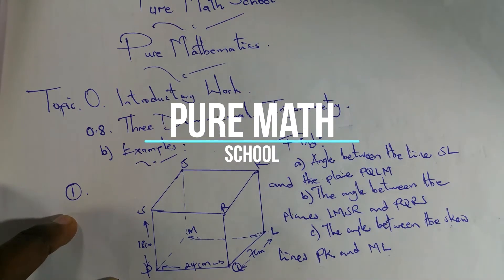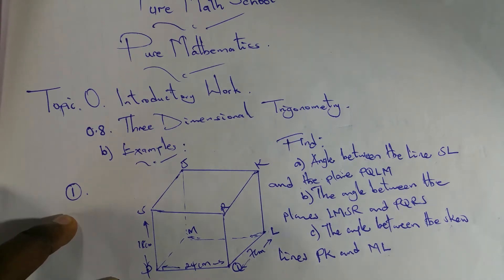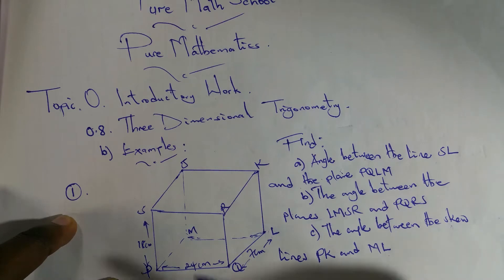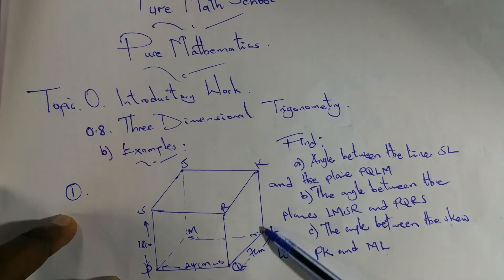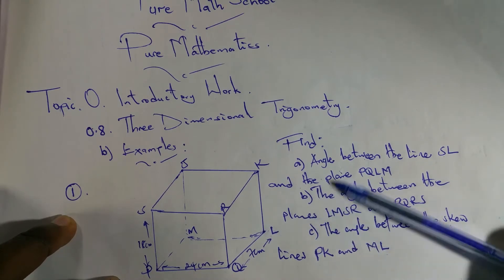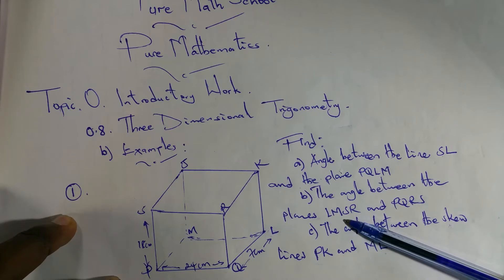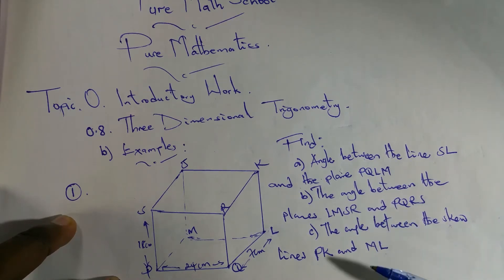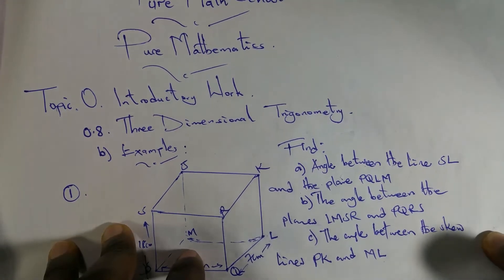Welcome back to Pure Math School. Today we are continuing our introductory work — this is part eight. In the previous video we introduced three-dimensional trigonometry, and today we are going to look at some examples. We have about two examples. The first example involves a cuboid of height 18 cm, length 24 cm, and width 7 cm. We need to find: the angle between line SL and plane PQLM; the angle between planes LMSR and PQRS; and the angle between skew lines PK and LM.